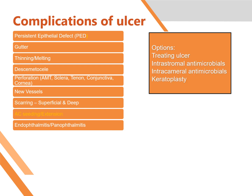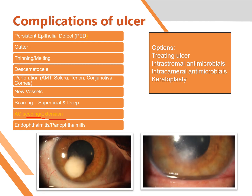Another complication is extension of the ulcer into the anterior chamber or seeding into the anterior chamber. As you can see here, the ulcer is small but extending into the anterior chamber. It can be treated by addressing the ulcer itself with intra-stromal injections, and the extension into the anterior chamber is treated with either intracameral antibiotics or intracameral wash. If those measures don't succeed, the only remaining option is keratoplasty.